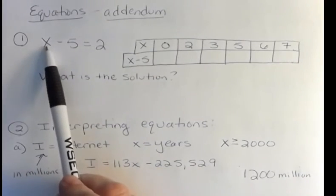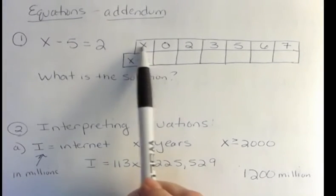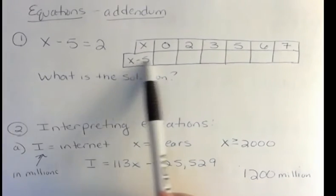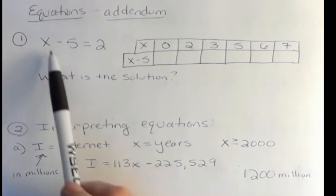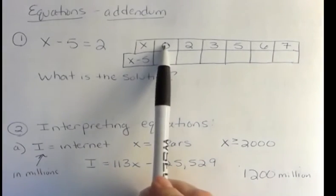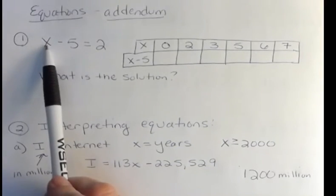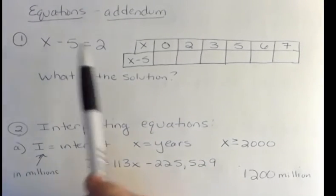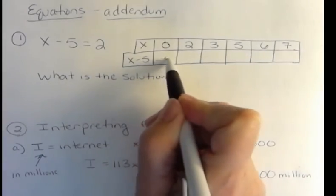So what they're wanting you to do is plug in this number in for x, because x is any one of these numbers, and then say what the expression over here would be if that was x. So if x was 0, you'd get 0 minus 5, so then the answer would be negative 5.